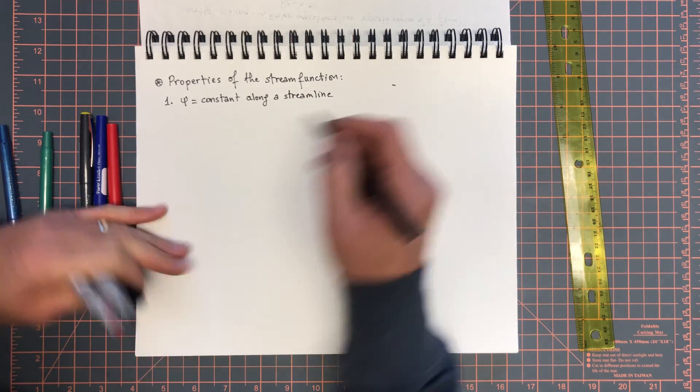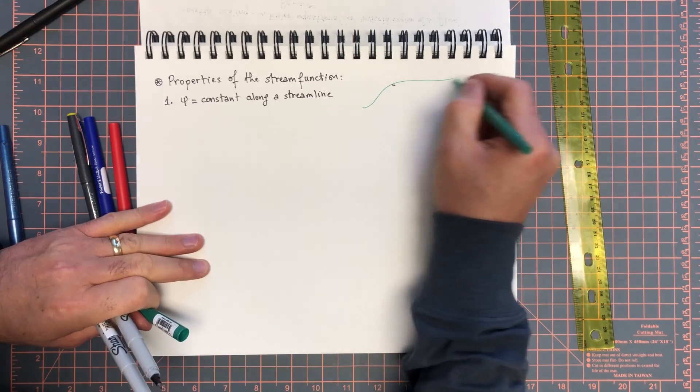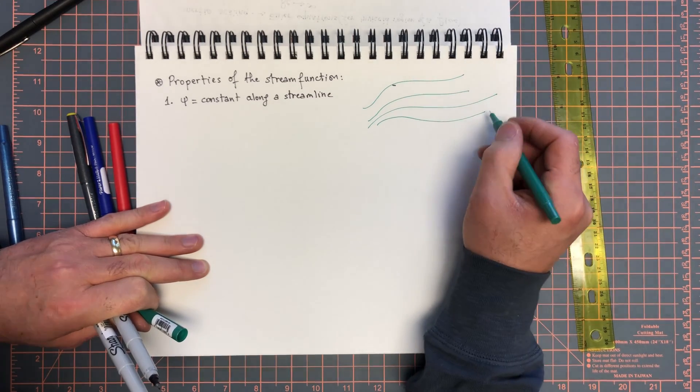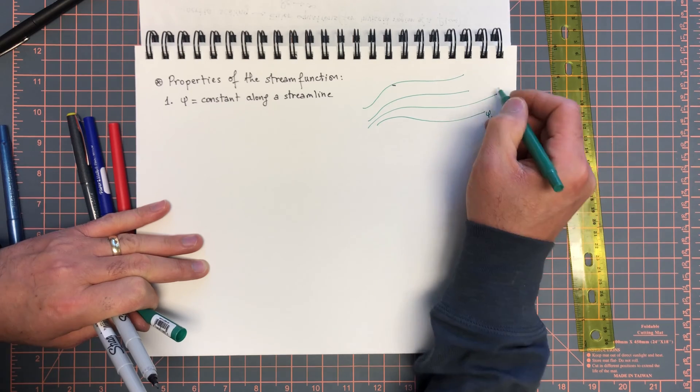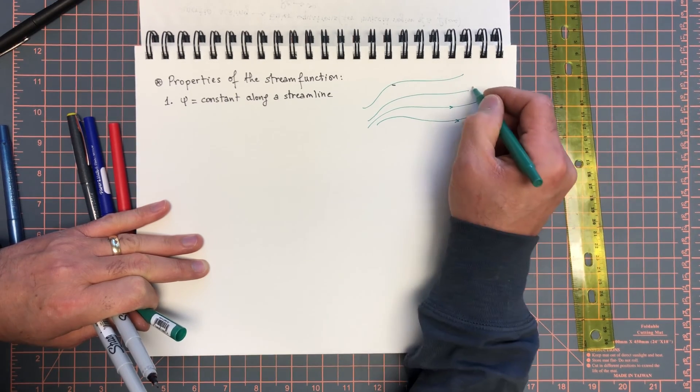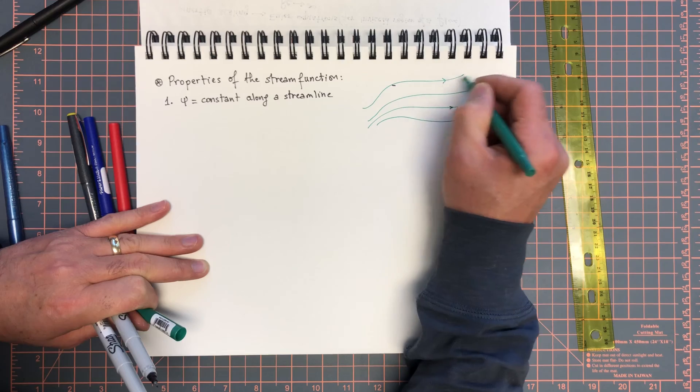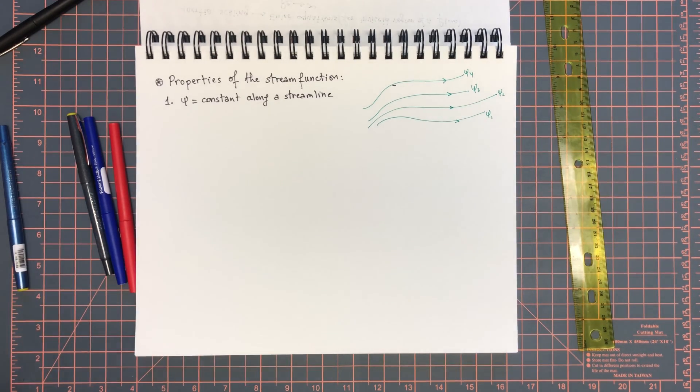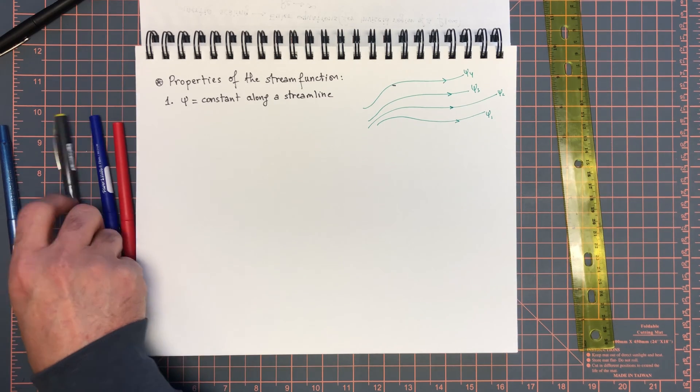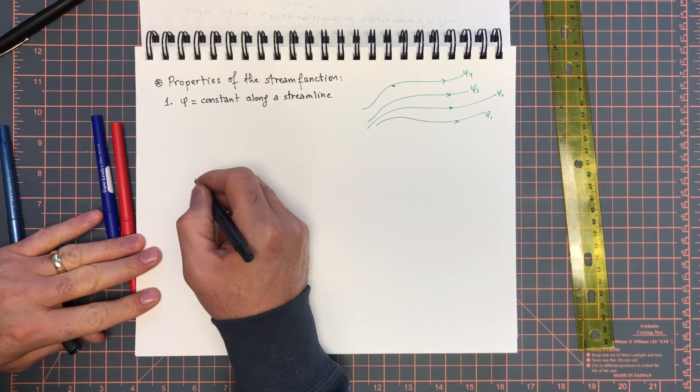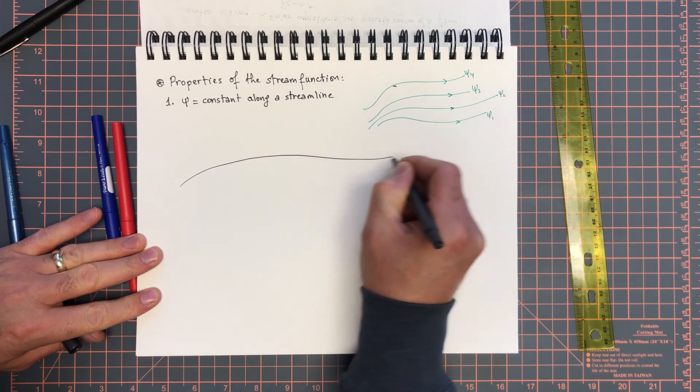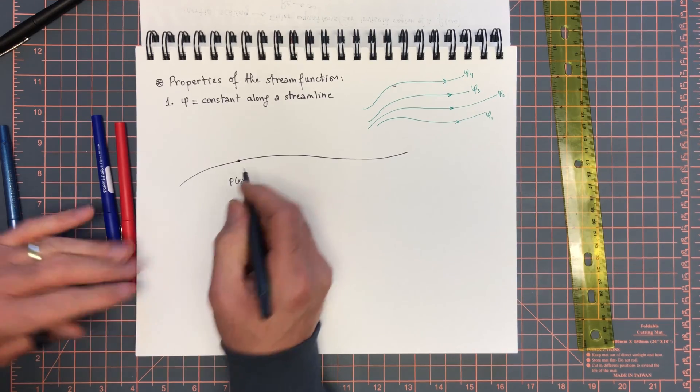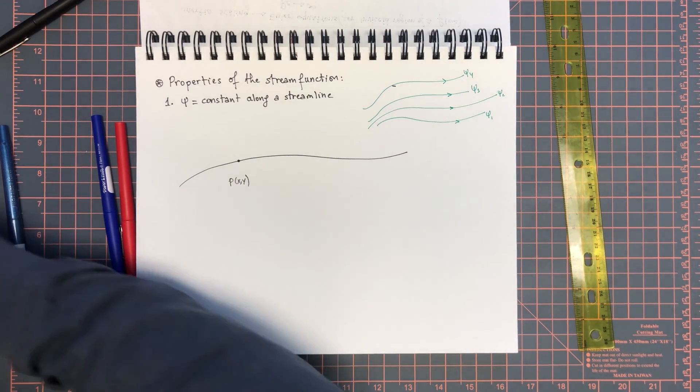So if you think of a flow, you have a bunch of streamlines - each one of those streamlines has a value ψ1, ψ2, ψ3, ψ4, etc. Now let's prove that ψ is constant along the streamline. I'm going to magnify the streamline. I'm going to pick a point P at (x,y), and at that P we have a velocity that is tangent to the streamline.